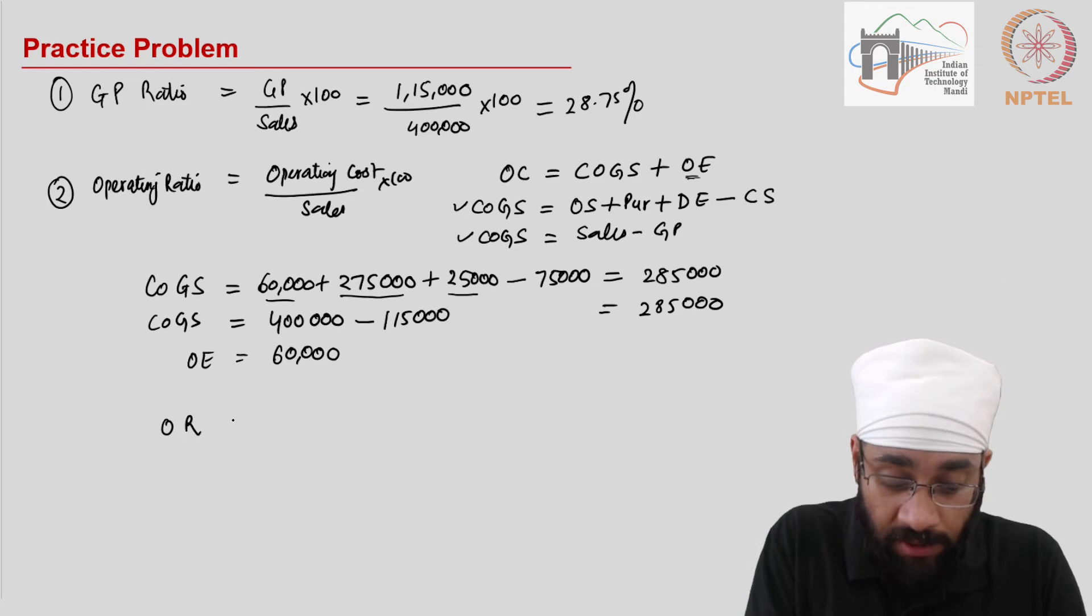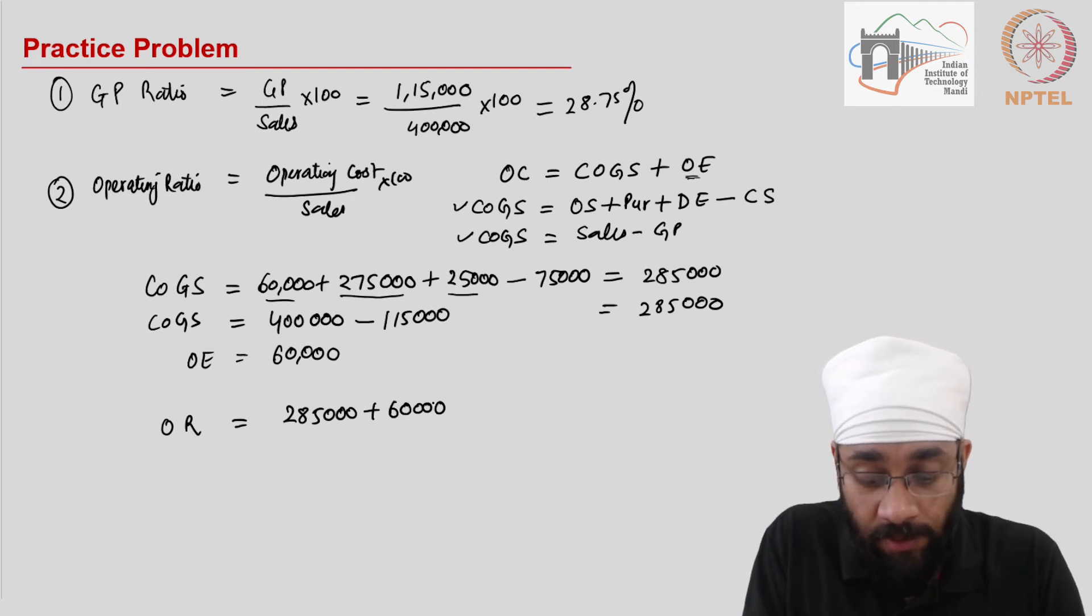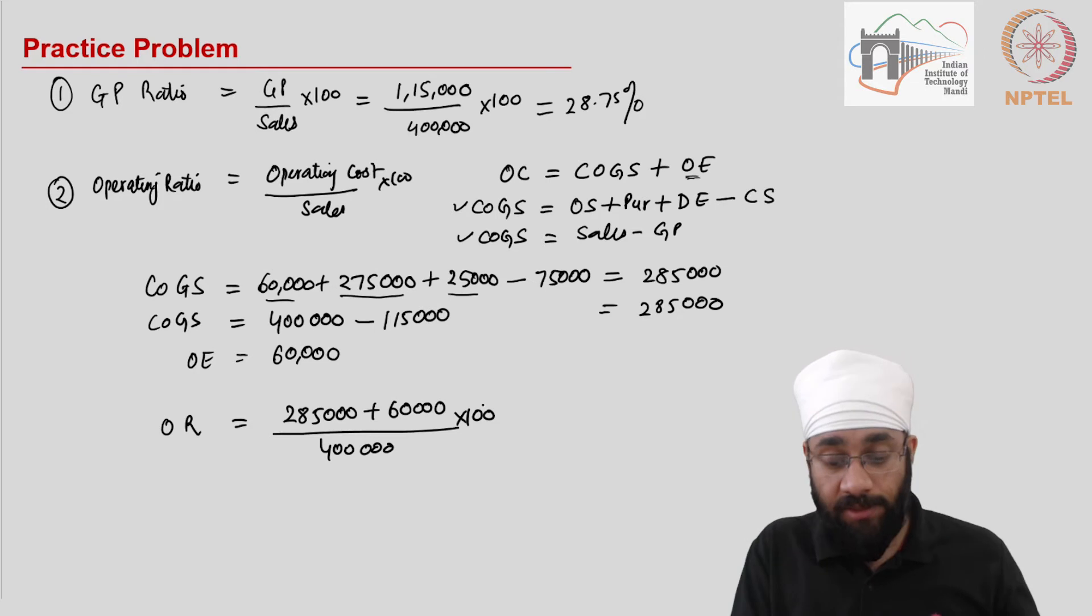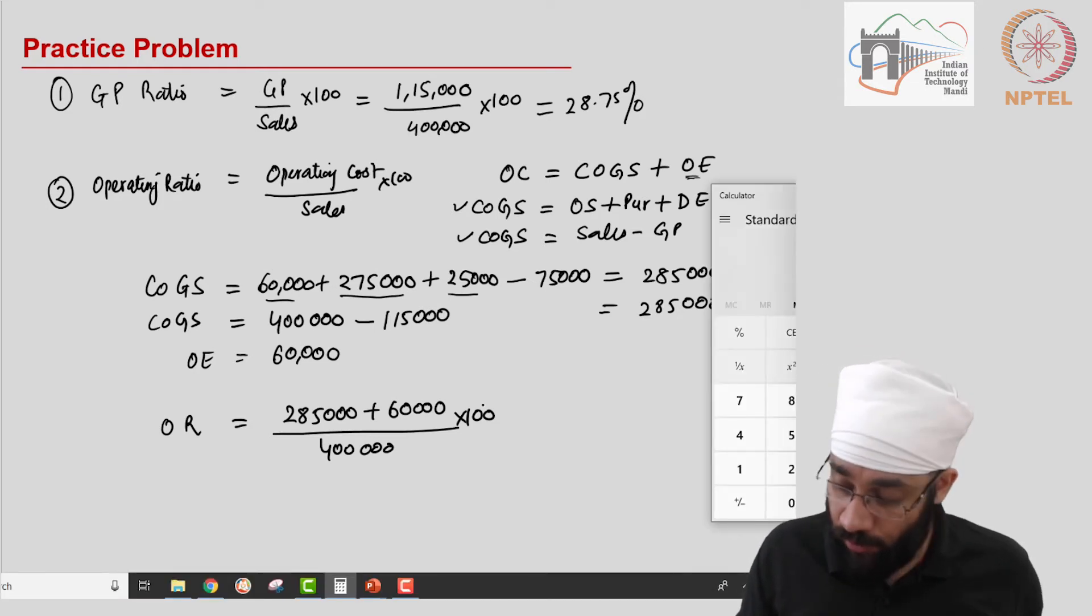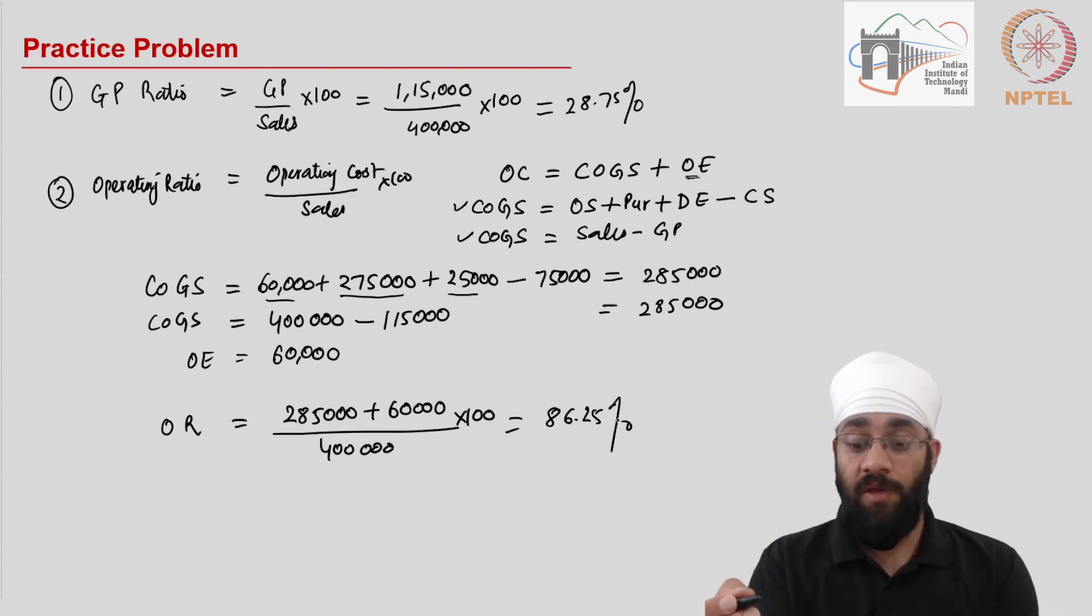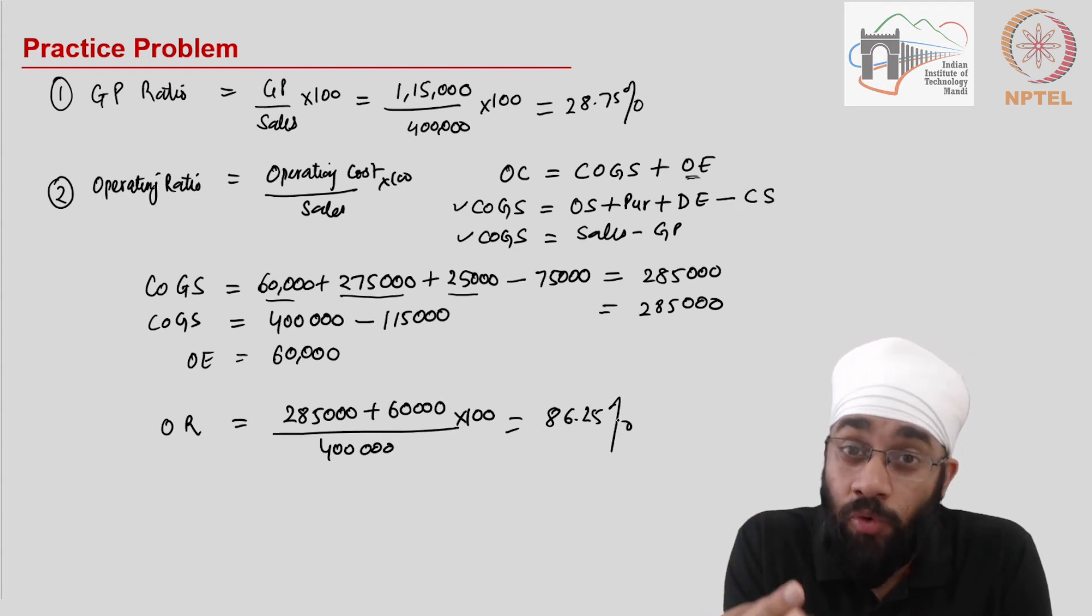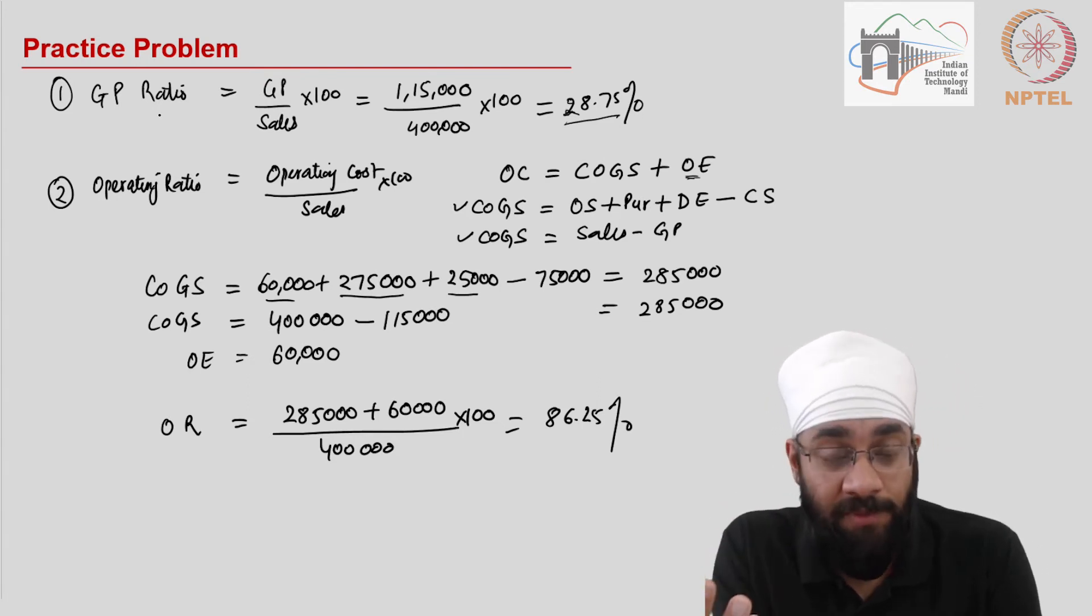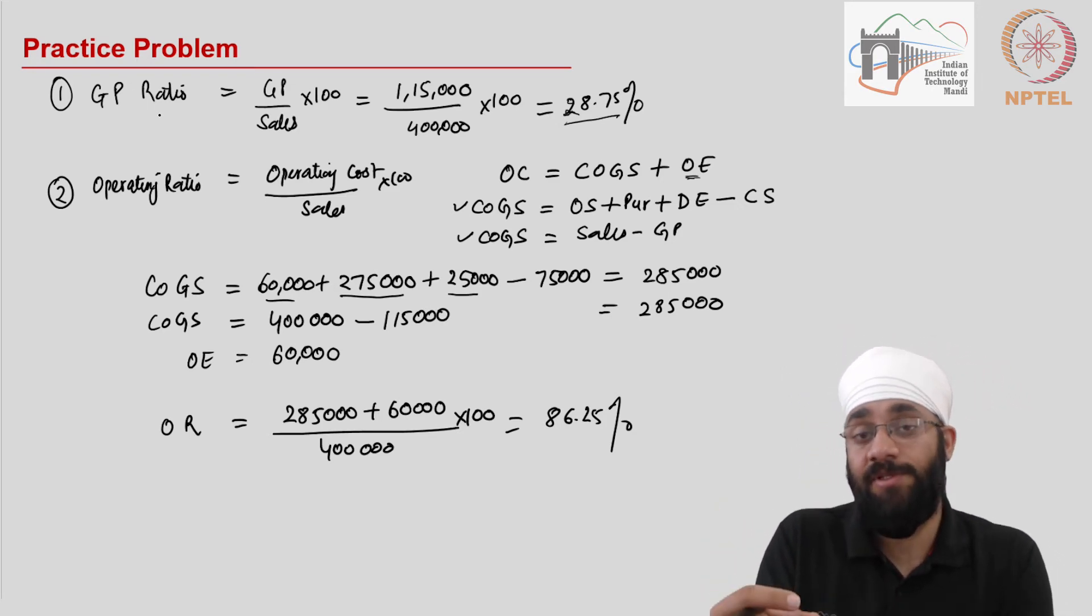So let's now figure out the operating ratio which is equal to cost of the goods sold, 285,000 plus the other operating expenses divided by the sales which is 4 lakhs multiplied by 100. This is 285,000 plus 60,000 divided by 400, so this is 86.25%. What does this mean? This means 86.25% of my revenue goes into my operating expenses only. Earlier I calculated 28.75% as the gross profit ratio which meant we had a gross margin of 28%. Now we are looking at operating cost. Our operating cost is 86% of the sales.